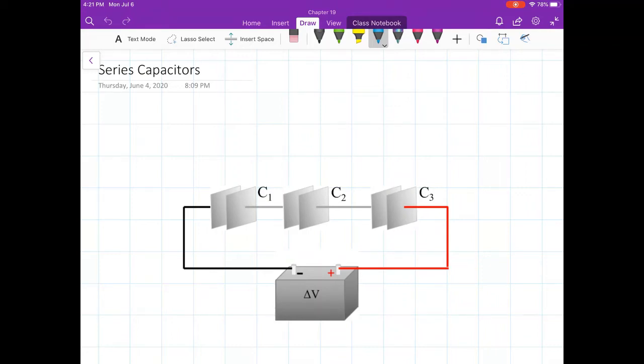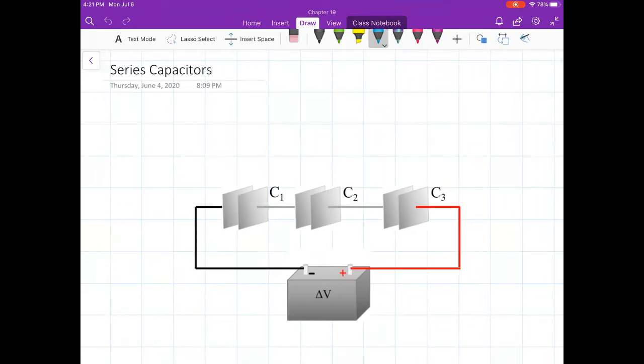Welcome. In this video, I'm going to talk about what happens when you put capacitors in series. Now here I'm still using the pictures, not the circuit symbols. I have the three capacitors, C1, C2, C3, the battery in series.